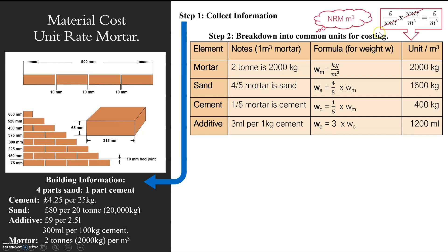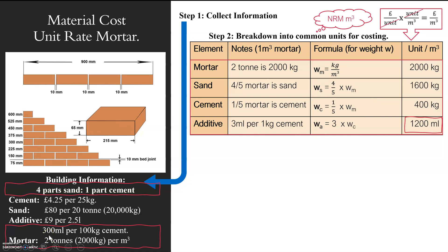So step two: I'm breaking down into my units, which will be kilograms. I've also got millilitres down here, so that's a separate one. Looking at my mortar — I know that per meter cubed it's 2,000 kilograms. My sand and cement are both ratios of that 2,000 kilograms: four-fifths and one-fifth. So that's easy — you just multiply by those numbers. For the additive, I've got 300 millilitres per 100 kilograms of cement. If you take the zeros off, it's three to one — so three millilitres per one kilogram of cement. I've got my cement right there: 400 kilograms. So I times that by three and that gives me how many millilitres of additive I need.